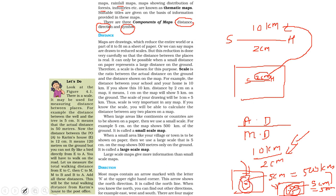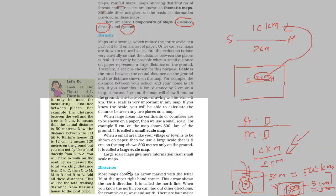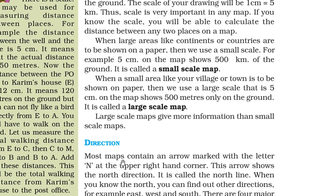Now we come to the second component of maps, which is direction. Most maps contain an arrow marked with the letter N at the upper right-hand corner. This arrow shows the north direction and is called the north line. When you know north, you can find out the other directions — east, west, and south.